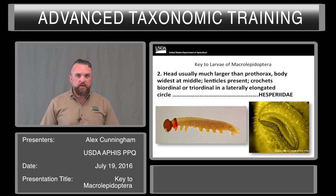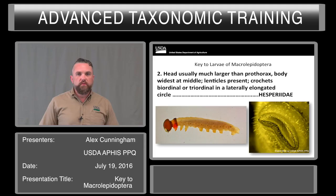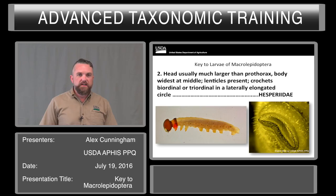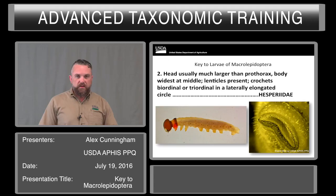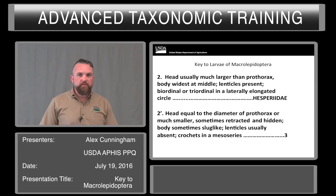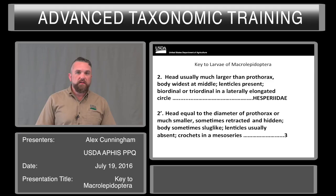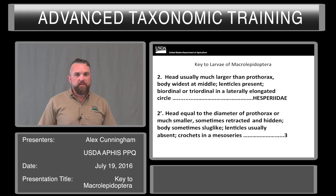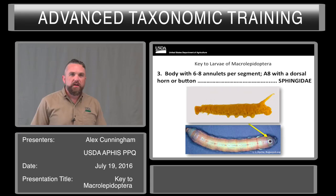Couplet two talks about the shape of the head. Head usually much larger than the prothorax, body widest at the middle, lenticles present, crochets biordinal or triordinal in a laterally elongated circle — the two things that really stand out are the shape of the head and the constriction behind it, and then this very characteristic crochet arrangement. Those are the Hesperiidae. If you look at a more mature Hesperiid from above, it is expanding in the middle, widest in the center. Those are usually very easy to key out quickly.